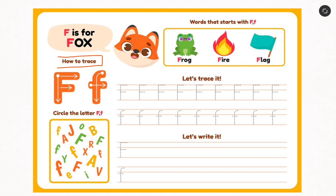So we start by looking at how to trace F. To trace the capital F, like you see the arrows over here, we move from top to bottom first, then we move from left to right, and then in the middle left to right as well. For a small f, we curve a little from top to bottom and then left to right, and that is how we do it.